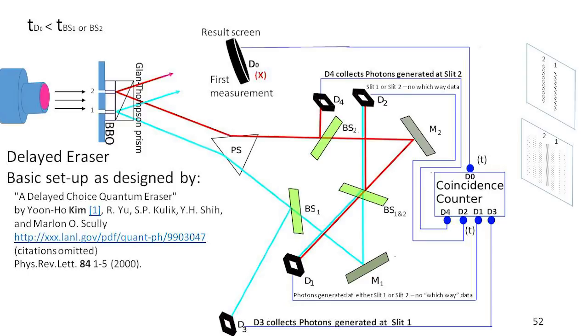So if the particle gets reflected at the first beam splitter BS2, it will go to D4. If it gets transmitted, it will end up with an equal chance in either D1 or D2. Now if a particle goes through slit 1, the same sort of thing happens. The signal particle will go up to D0 and hit that result screen and be recorded before that particle gets down to beam splitter 1, and is either put into D3, which means it went through slit 1.